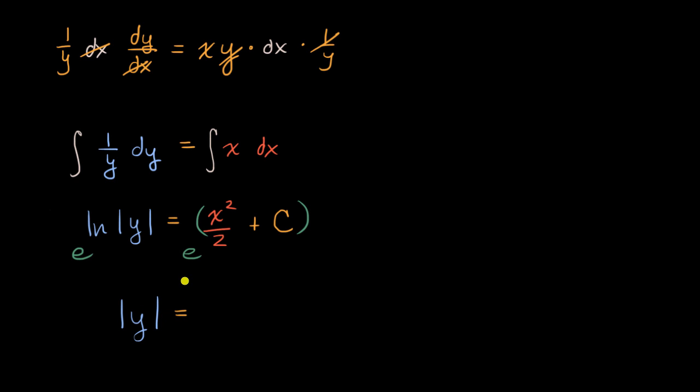and we get that is being equal to, now we could use our exponent properties, this over here is the same thing as e to the x squared over two times e to the c. I am just using our exponent properties here. Well e to the c, we could just view that as some other type of constant. So we could rewrite this whole thing as c e to the x squared over two.